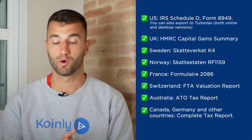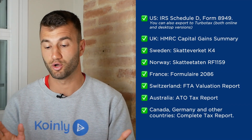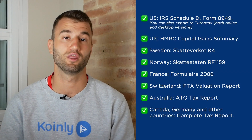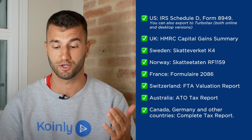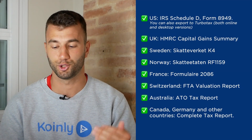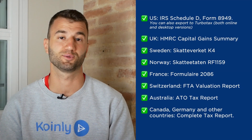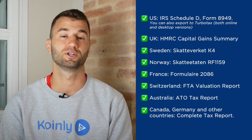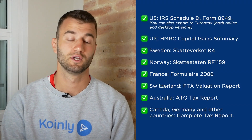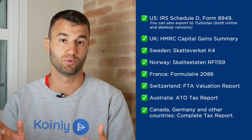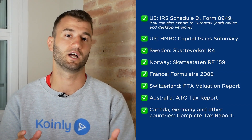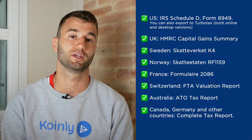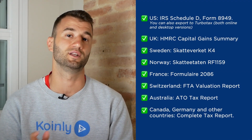We have plenty of different reports. For the US we have the IRS Schedule D Form 8949, and you can also export to TurboTax in both online and desktop versions. We have reports for UK, Sweden, Norway, France, Switzerland, Australia, Canada, Germany, and other countries. We also have the Complete Tax Report, which is a document you can print off and give directly to your accountant, or alternatively invite them to our website to set up their account. Check your country's rules and regulations, as this tax report might be deductible.